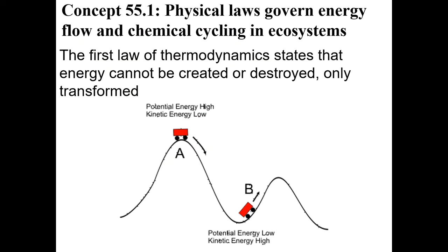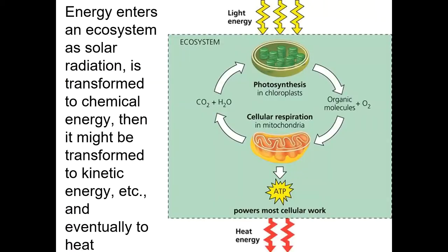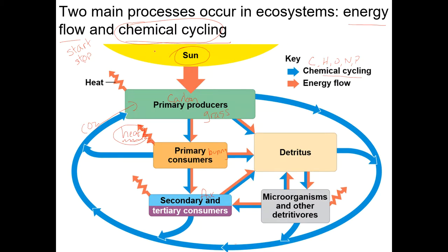Physical laws govern energy flow and chemical cycling. The First Law of Thermodynamics states that energy is not created or destroyed, only transformed. Like a cart going down a hill — kinetic and potential energy convert back and forth, and some is lost as heat due to friction, but none is destroyed. The same applies to ecosystems: energy from the sun goes to primary producers and then consumers, with some lost as heat. Be careful not to say producers create energy — they only transform it from sunlight to organic molecules.